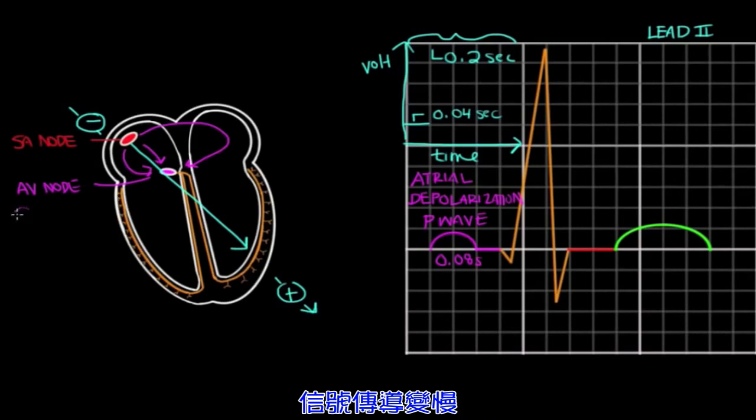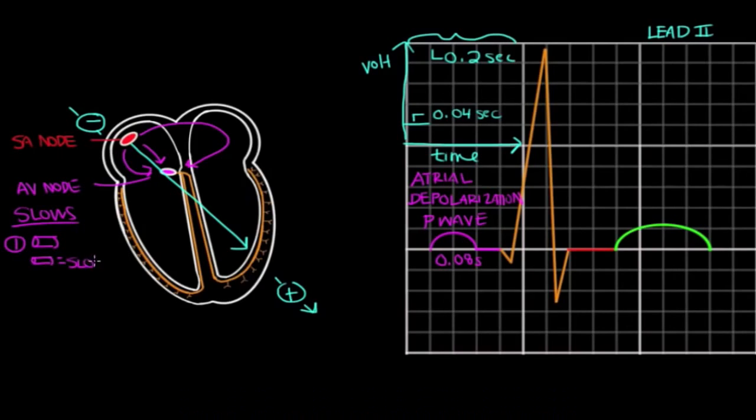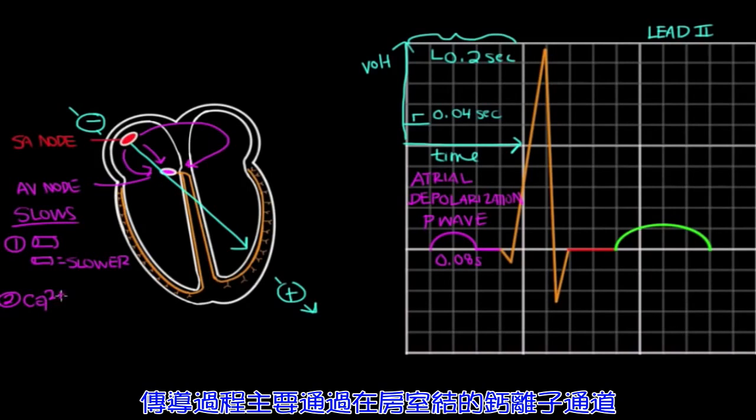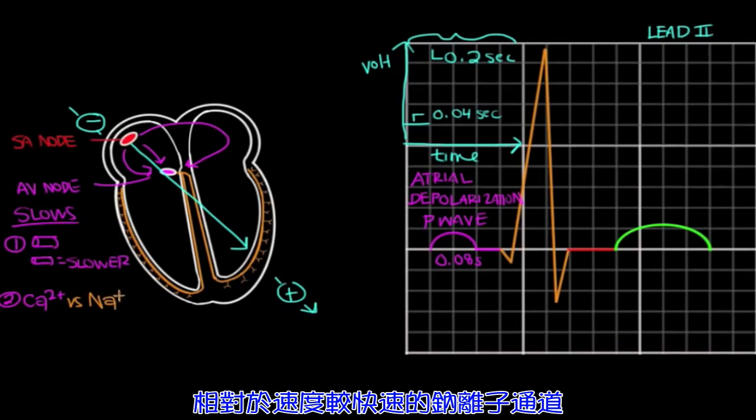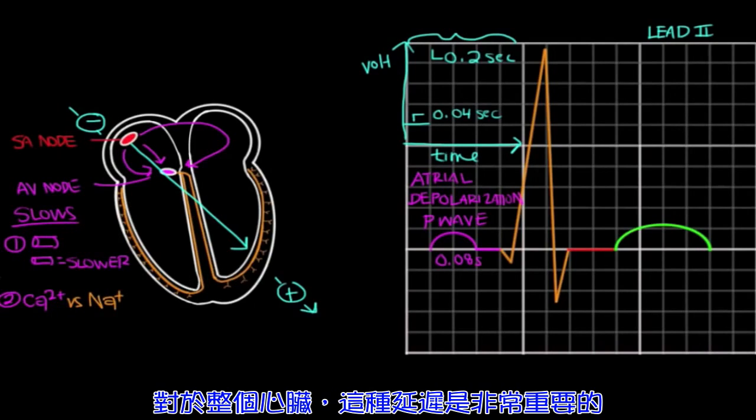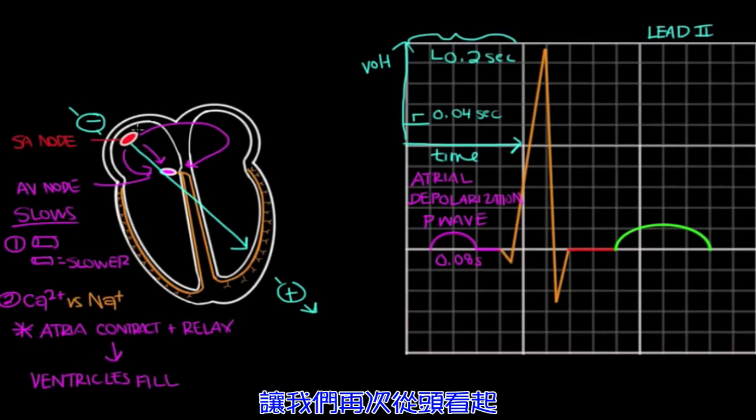After the signal reaches the AV node, conduction slows down. And this is for a couple reasons. One is that AV node cells are smaller in diameter than the other cells. And as a rule, the smaller the diameter of the cell, the slower the conduction. In fact, AV node cells are among the smallest diameter cells in the body. Also, conduction runs primarily through calcium channels in the AV node. Calcium channels have inherently slow kinetics. And this is in contrast to fast sodium channels that we see in the ventricular conduction system. This delay in conduction is really important because it allows time for the atria to contract and relax, which optimizes the time for the ventricles to fill. So again, we have the signal leaving the SA node, going to the AV node where conduction slows down. This all happens before ventricular depolarization.